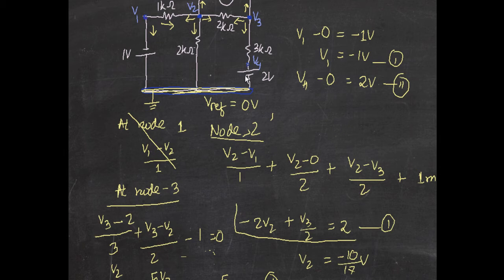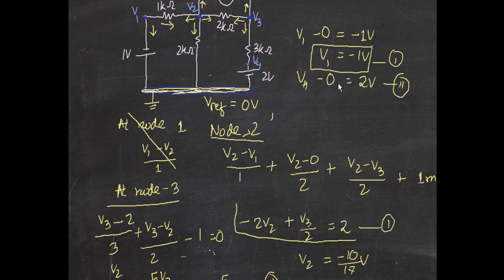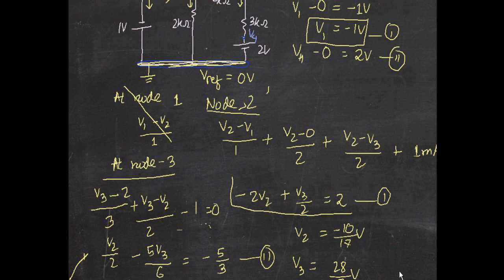An important tip: whenever there is a voltage source between two nodes, identify those nodes first and write their values directly. If you don't identify these early, you end up writing four complicated equations, which takes much longer. Always look for nodes connected by voltage sources so you can determine those voltages beforehand and simplify your equations.